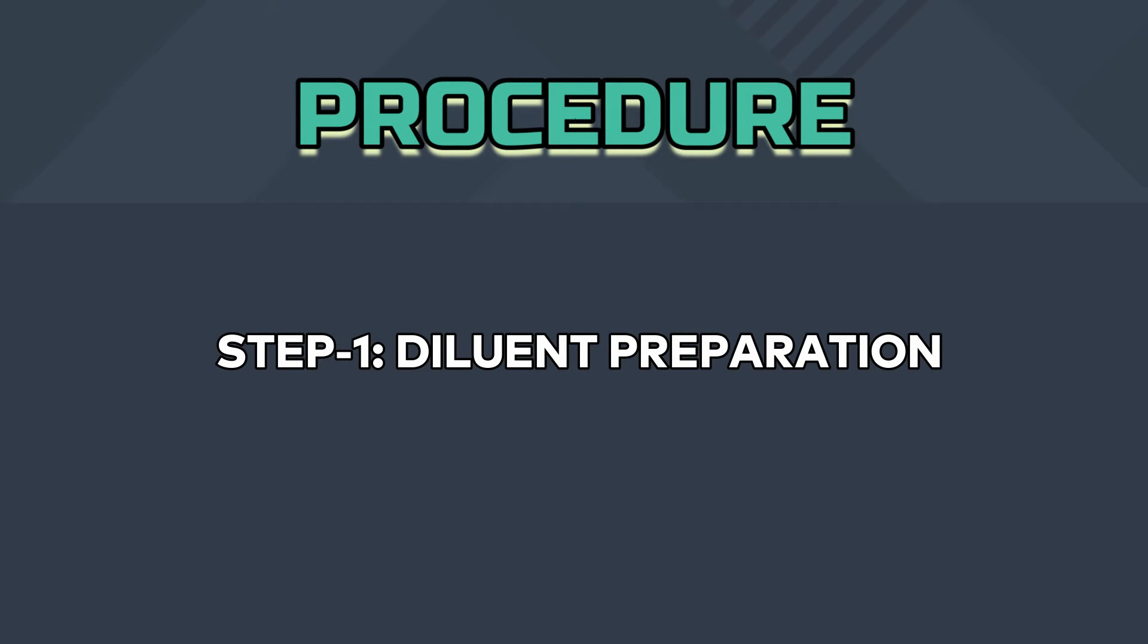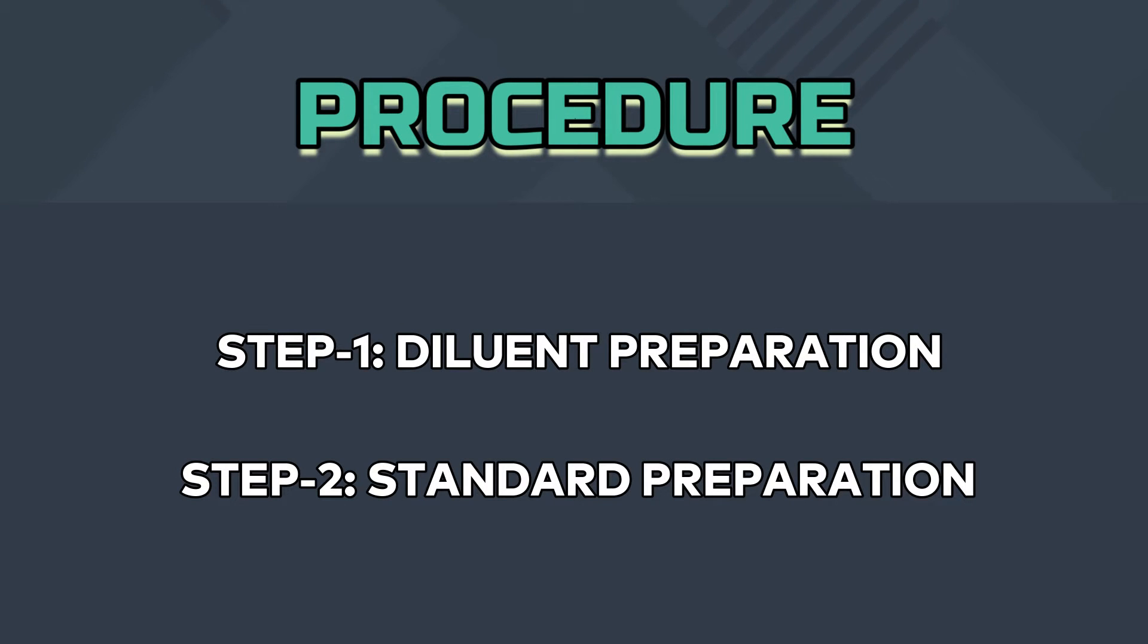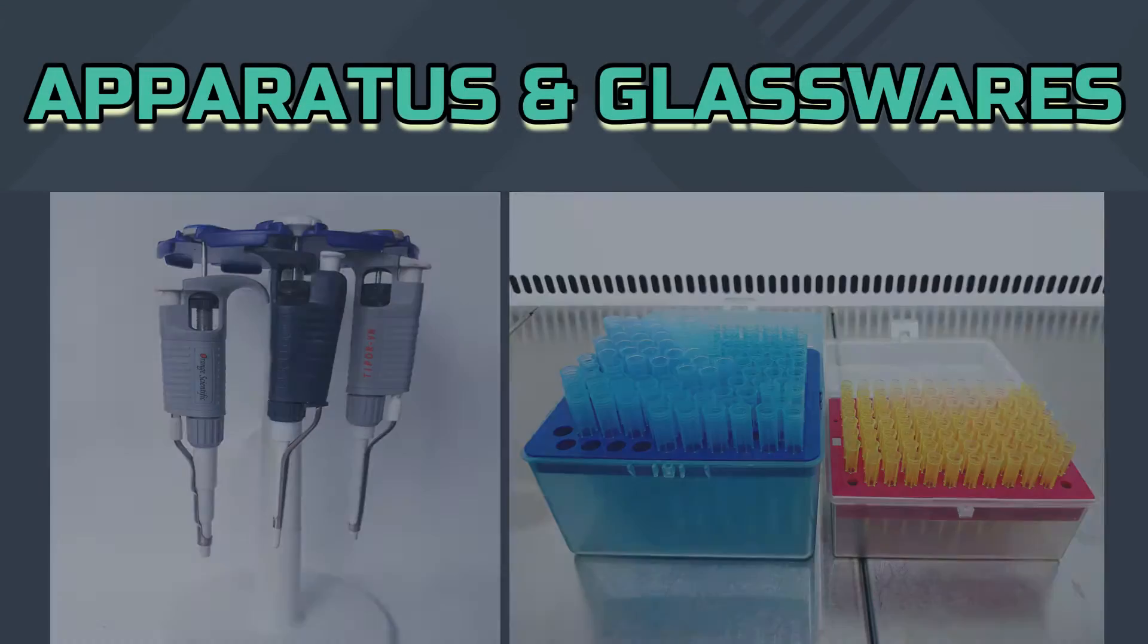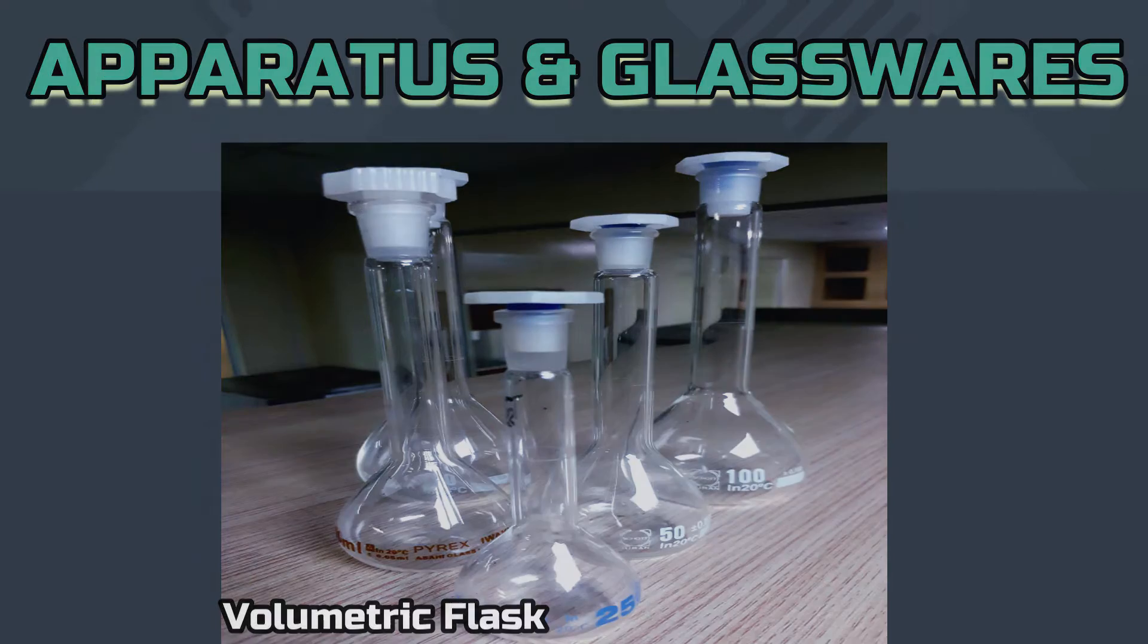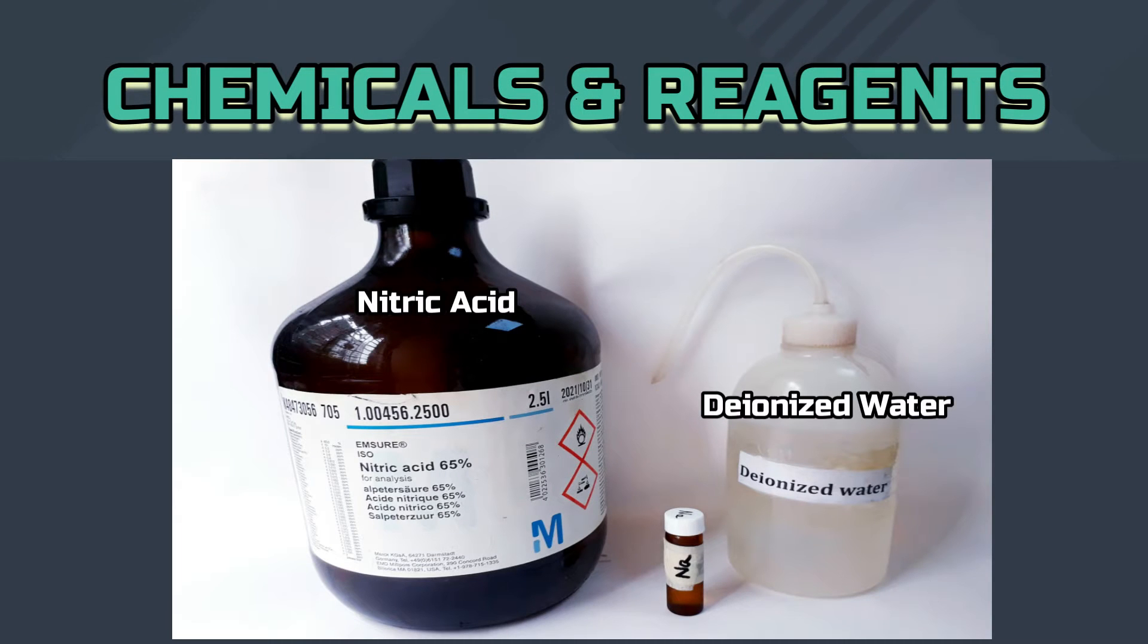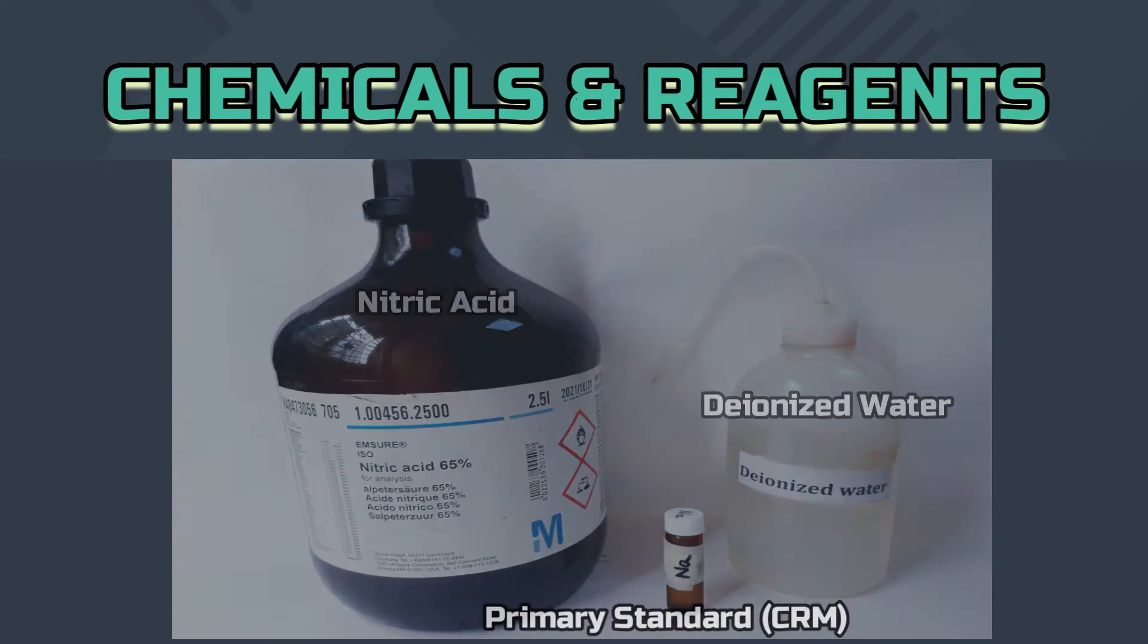First of all, we will prepare a diluent, then we will go for the standard preparation. Necessary apparatus are micropipette, micropipette tips, volumetric flasks, nitric acid, deionized water and primary standard or CRM.